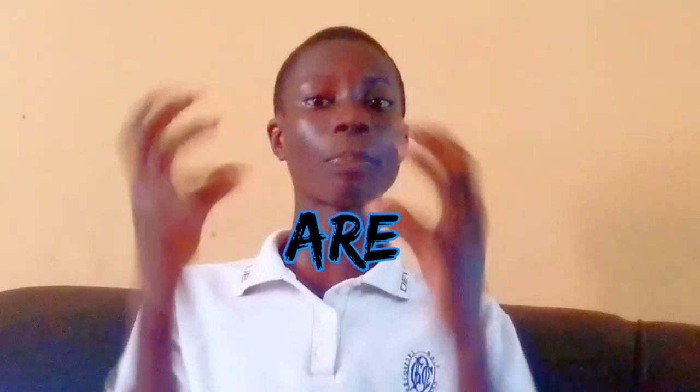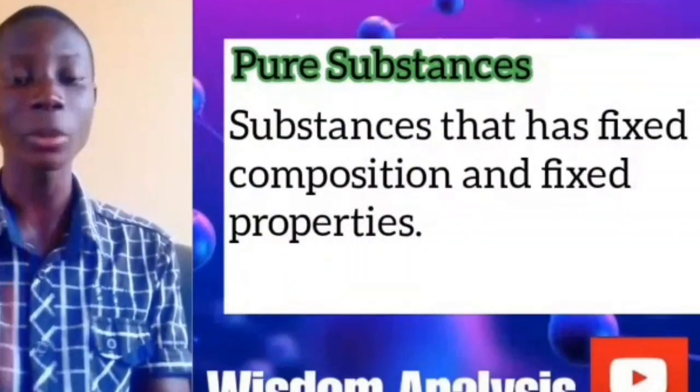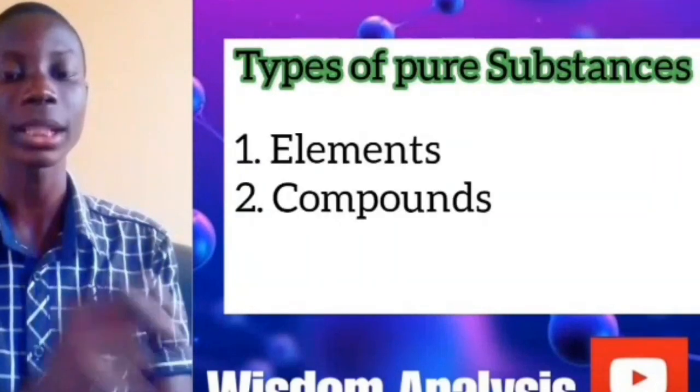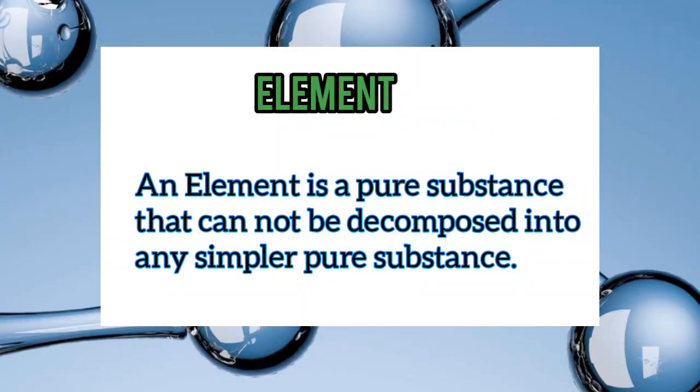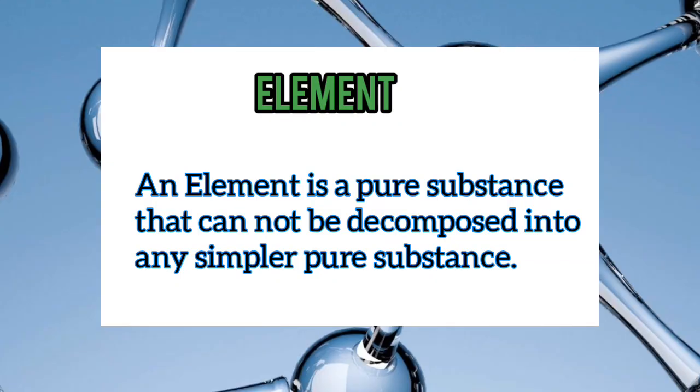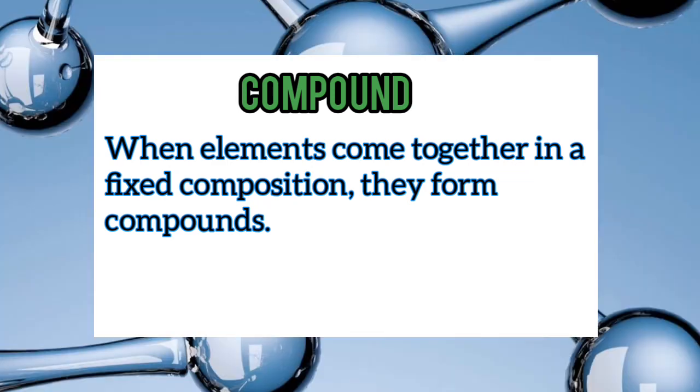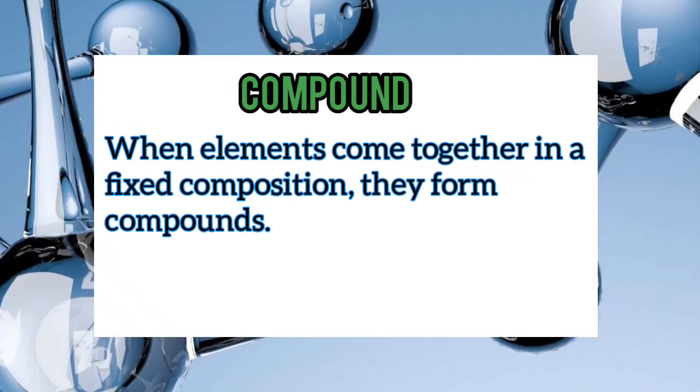Elements and compounds are pure substances. Pure substances are substances that have a fixed composition and fixed properties. An element is a pure substance that cannot be decomposed into any simpler pure substance — you cannot decompose oxygen to form carbon and nitrogen. So elements are like the units of every pure substance. Compounds are formed by the combination of elements. When substances combine physically, it is called a mixture.